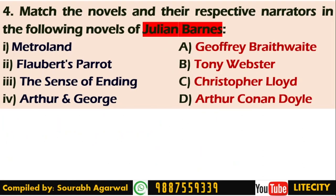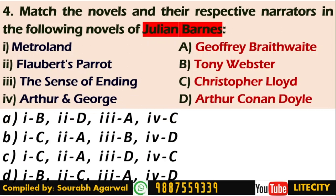The last question is about Julian Barnes — match his novels with their respective narrators. Metroland, his first novel, is narrated by Christopher Lloyd, a young narrator presenting a dystopian kind of structure. Flaubert's Parrot is narrated by Geoffrey Braithwaite. The Sense of an Ending, for which he won the Booker Prize, and Arthur and George are also included. These are some of the important matching combinations for Julian Barnes' works.